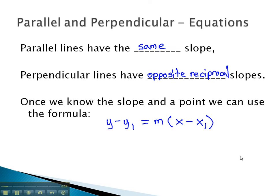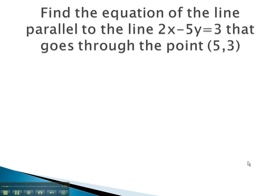For example, if I wanted to find the equation of the line parallel to 2x minus 5y equals 3, we would first need to know the slope of this line. To find the slope, we must solve it for y to put it in intercept form.